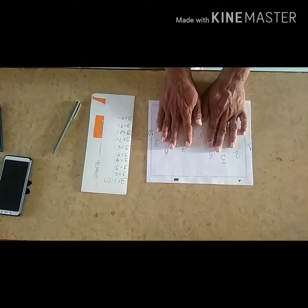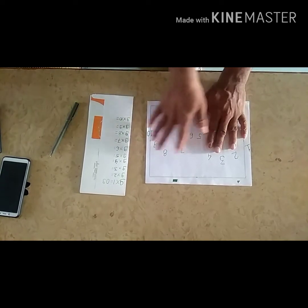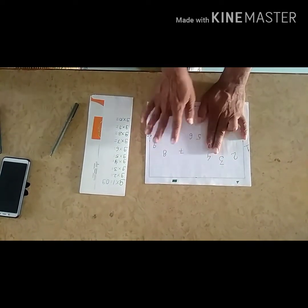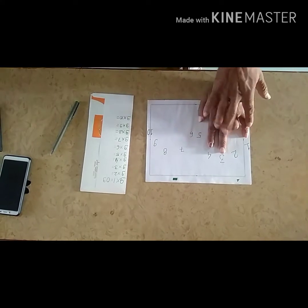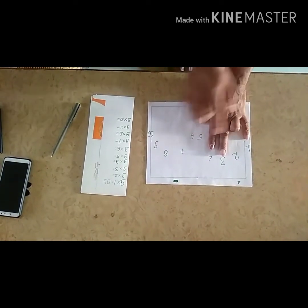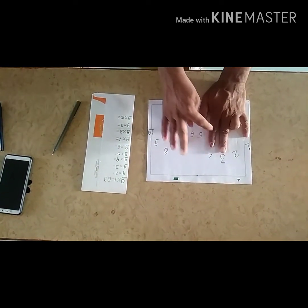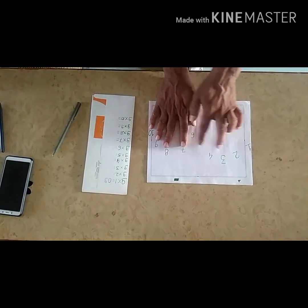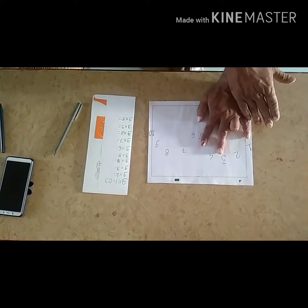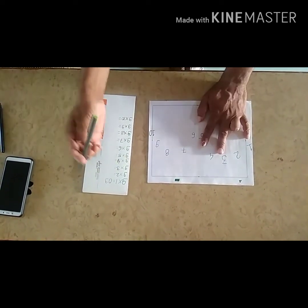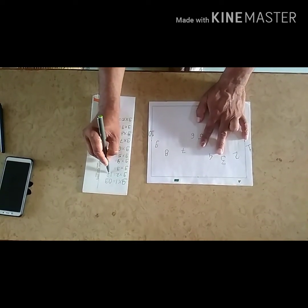For multiplication of 9 into 2, we will fold the second finger. Again count, 1 finger on the left, on the right, 1, 2, 3, 4, 5, 6, 7, 8. 1 on the left, 8 on the right. So we will write 1, 8.